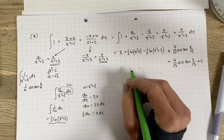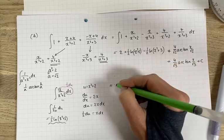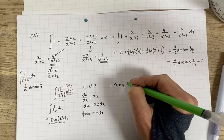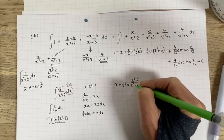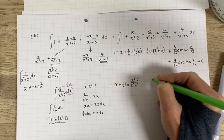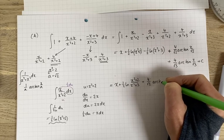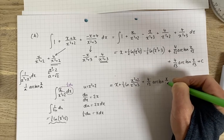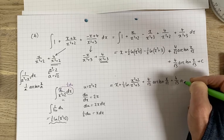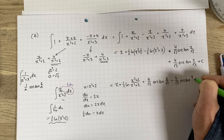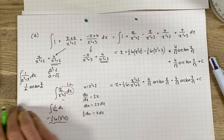There you go. So the only final thing you could do with this expression, you can combine the logs. So it gives you a half ln x squared plus 2 over x squared plus 3 plus 4 over root 2 arctan x over root 2 plus 4 over root 3 arctan x over root 3 plus c. There you go.